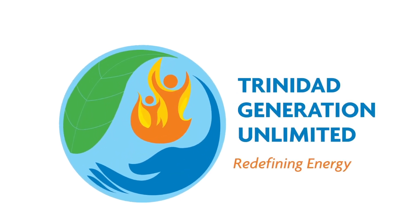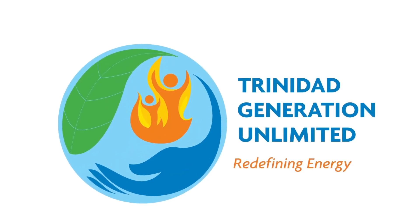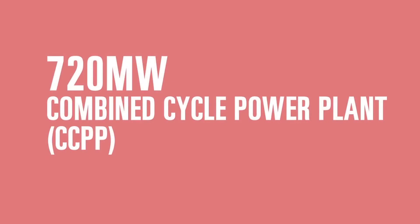Trinidad Generation Unlimited (TGU) is a combined cycle power plant (CCPP) with a contracted electrical power output of 720 megawatts.